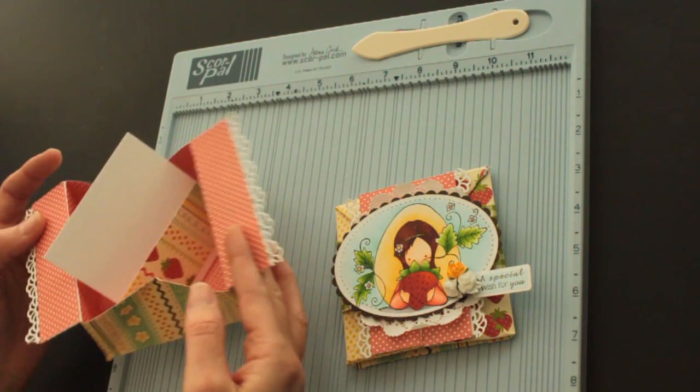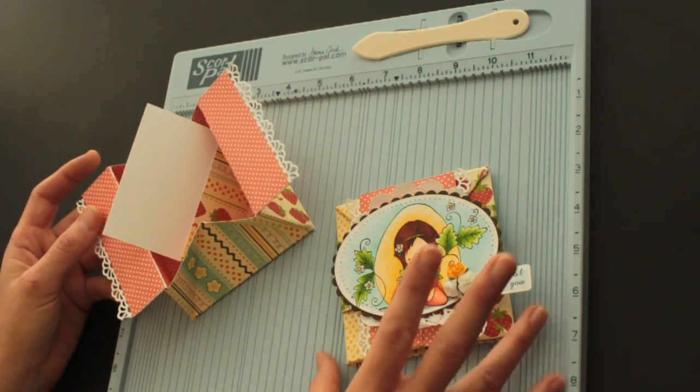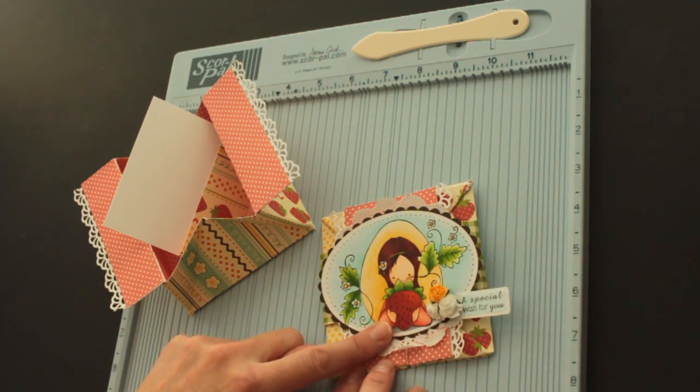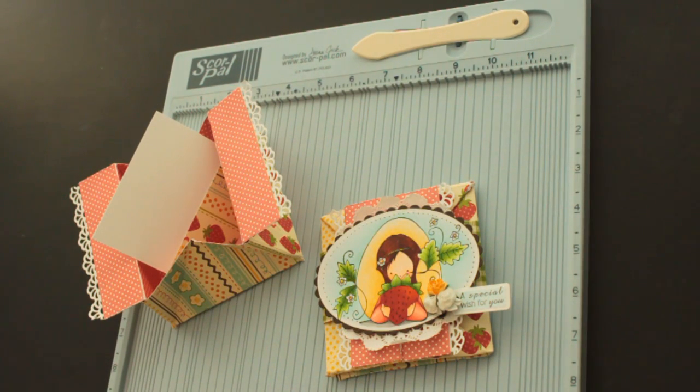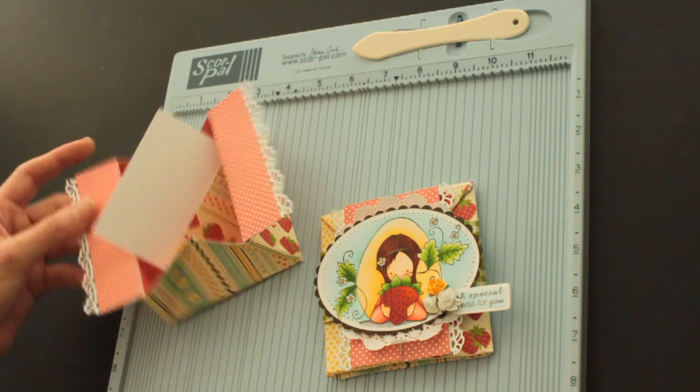It's a card folded out of an 8.5 x 11 piece of patterned paper or thin cardstock that folds down like this and then when you open it up, it looks like a box. The patterned paper I'm using is from October Afternoon Fly a Kite and the images are from Whiff of Joy.